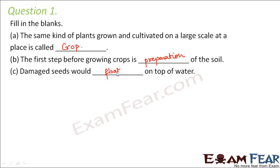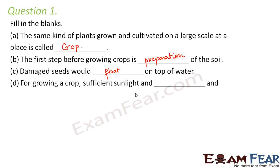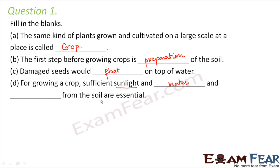For growing a crop, sufficient sunlight, water, and nutrients from the soil are essential. Sunlight is one basic necessity; water is another, which is why we have irrigation. Plants also get nutrients from the soil, which is why we apply manures and fertilizers. So sunlight, water, and nutrients are the three important things essential for the growth of a crop.